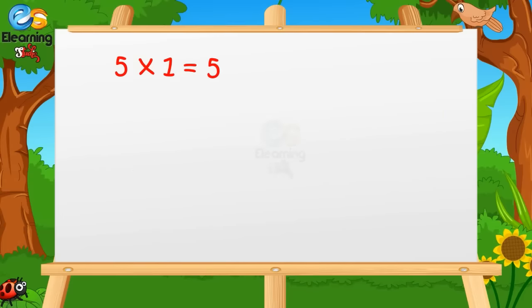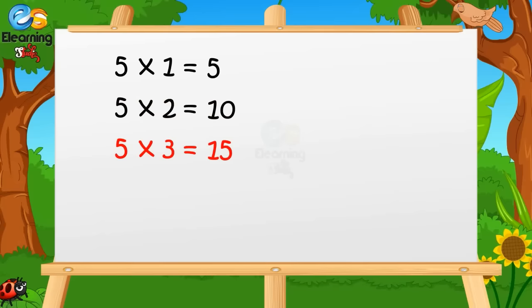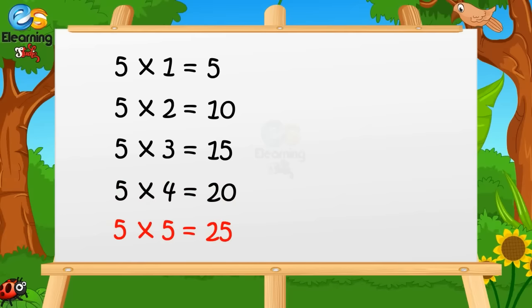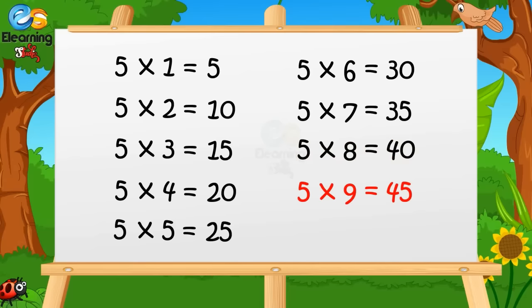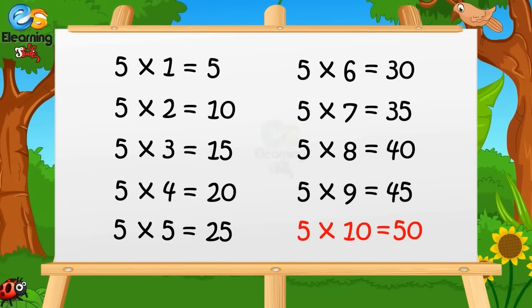5 ones are 5. 5 twos are 10. 5 threes are 15. 5 fours are 20. 5 fives are 25. 5 sixes are 30. 5 sevens are 35. 5 eights are 40. 5 nines are 45. 5 tens are 50.